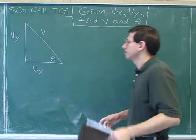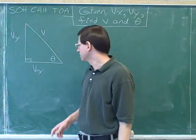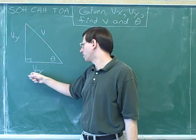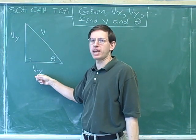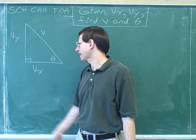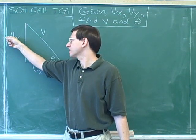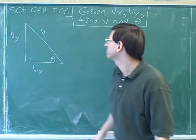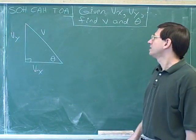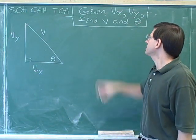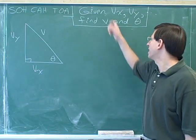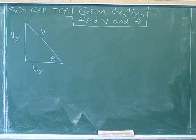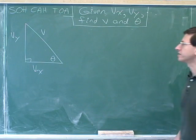Here we have a right triangle. The length of this side is called v. The length of this side is called v sub x, and the length of the vertical side is called v sub y, and this angle is called theta. If you're given v sub x and v sub y, find v and theta.